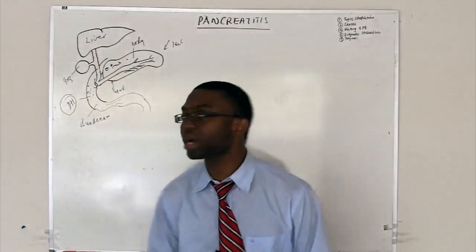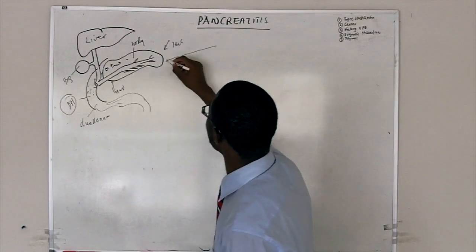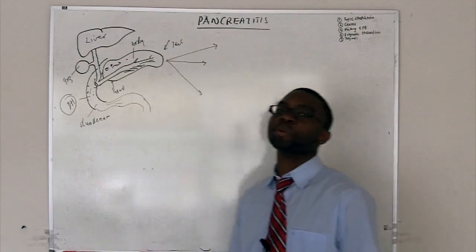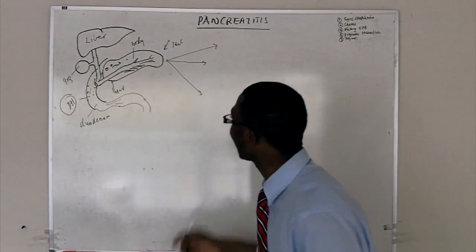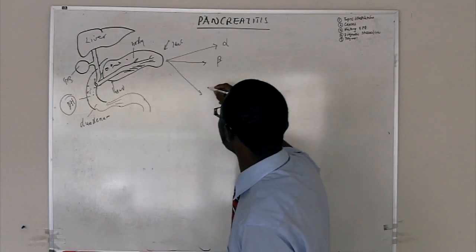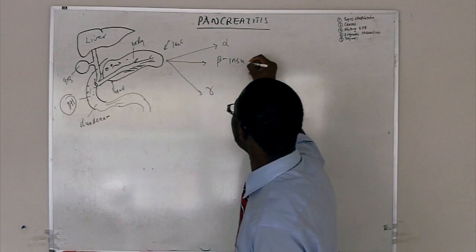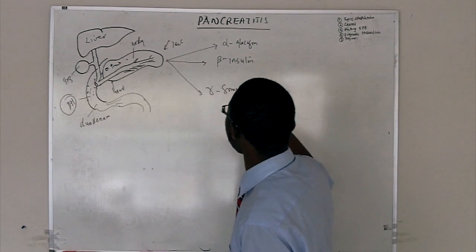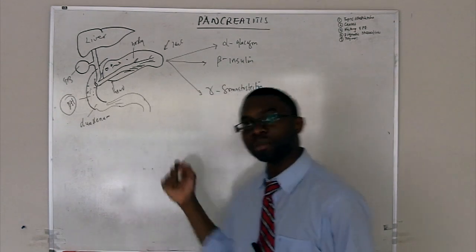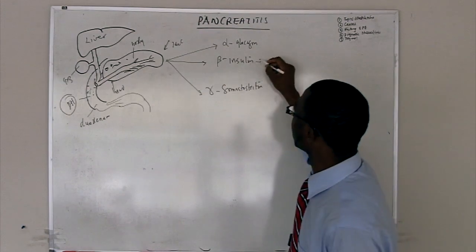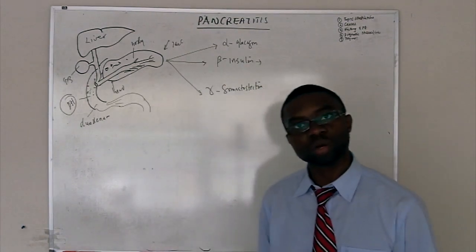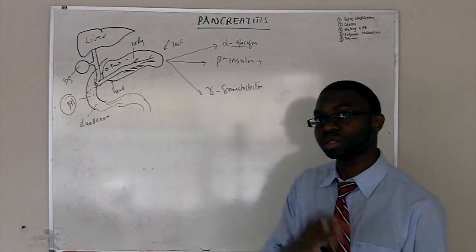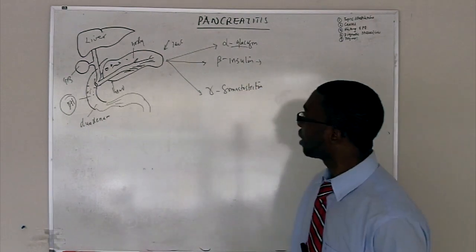Also, let's talk about the pancreas for a little bit before we talk about pancreatitis, because it does a beautiful job. We don't really appreciate the pancreas enough. It's a nice guy. It's got alpha cells, beta cells, and delta cells. The beta cells make insulin. The alpha cells make glucagon. And the delta cells make somatostatin, which is an inhibitory hormone.